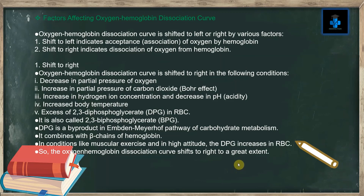Now let's see the factors affecting the oxygen-hemoglobin dissociation curve. The curve is shifted to the left or right by various factors. A shift to the left indicates acceptance or association of oxygen by hemoglobin. A shift to the right indicates dissociation of oxygen from hemoglobin.